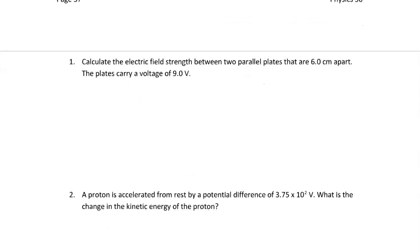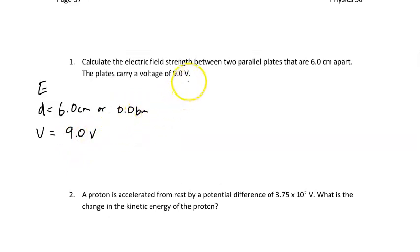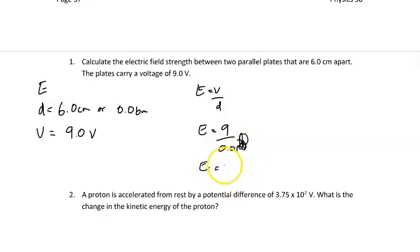So if we were to calculate the electric field strength between two parallel plates that are six centimeters apart — a distance of 6.0 centimeters or 0.06 meters — with an electric potential difference of 9 volts, then E equals V over D. We take 9 volts divided by 0.06, and that electric field strength is 150 volts per meter.